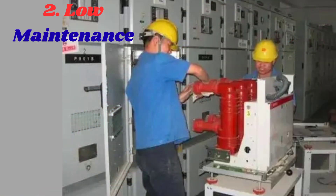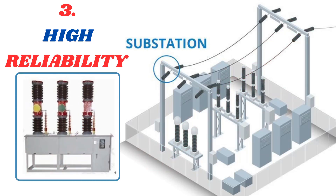Second, low maintenance requirements: VCBs are known for their low maintenance requirements, which is a significant advantage in today's fast-paced industrial landscape. With fewer moving parts and no SF6 gas to maintain, VCBs reduce downtime and increase system availability, allowing industries to focus on production without worrying about frequent maintenance shutdowns. Third, high reliability: vacuum circuit breakers are renowned for their high reliability and long lifespan. The vacuum interrupter technology provides a stable and reliable arc-quenching mechanism, minimizing the risk of electrical faults and hazards.